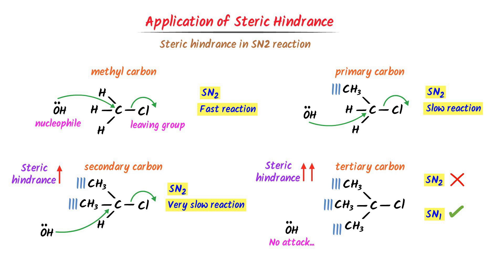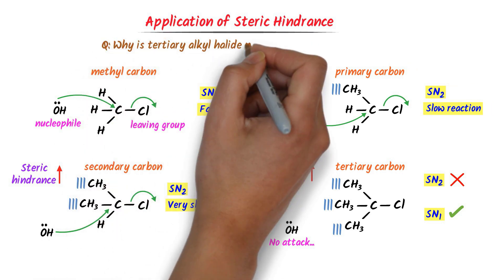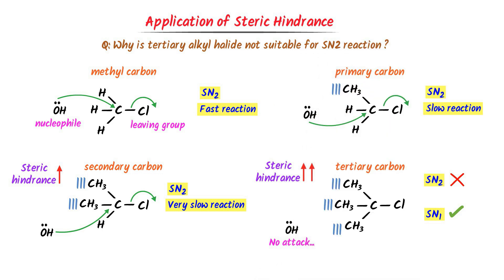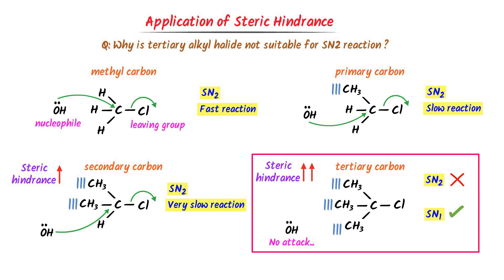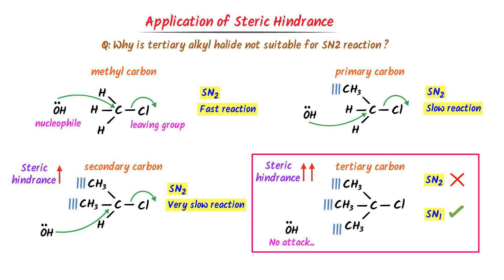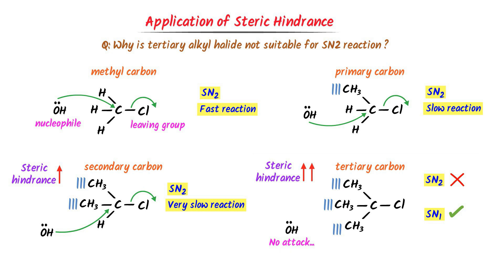Also remember that in board examinations, it is usually asked why tertiary alkyl halide is not suitable for SN2 reaction. The answer is simple: it is due to high steric hindrance. The central carbon atom is blocked from all sides and the nucleophile cannot attack on it. That's why tertiary alkyl halide is not suitable for SN2 reaction. Remember that they only follow SN1 reaction. I hope that you have learned all about steric hindrance.